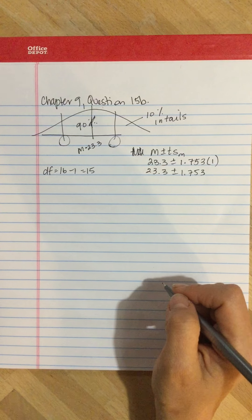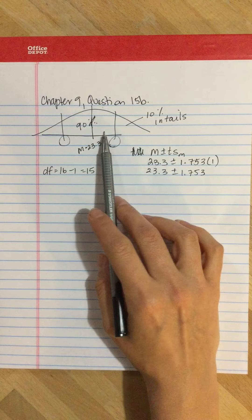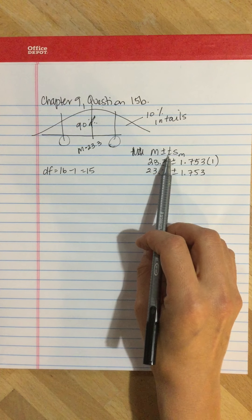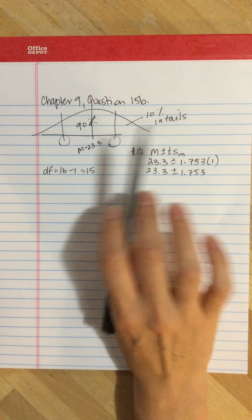A really common mistake that students will make is instead of finding the t value for the confidence interval, they'll use the t value from part 1, but that's not what you want to do.